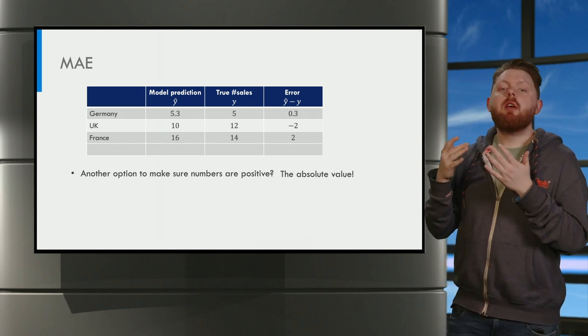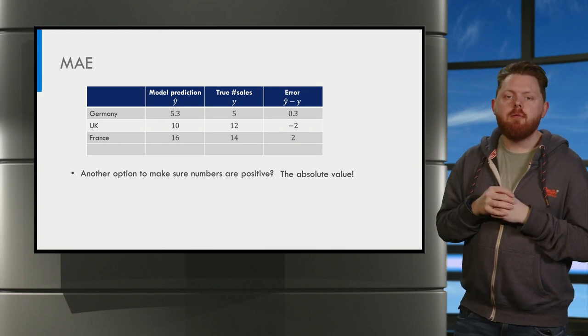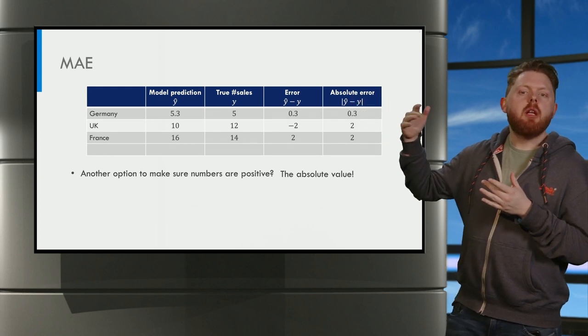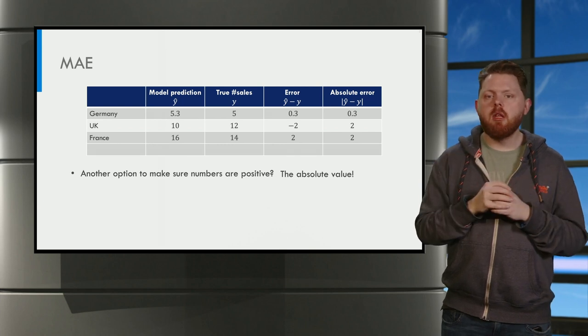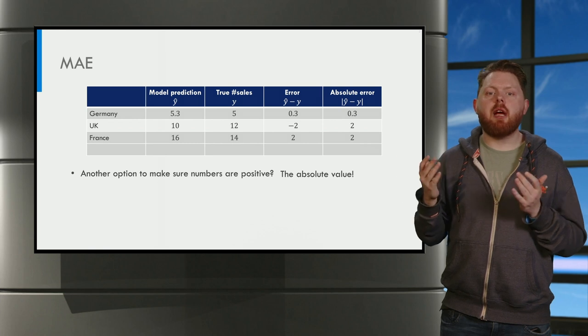What we can do is we can use the absolute value of the error instead. These are shown in the fourth column. The absolute errors are 0.3, 2, and 2. As you can see, we drop the minus sign in front of the negative numbers.